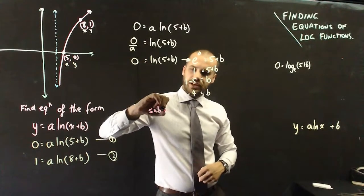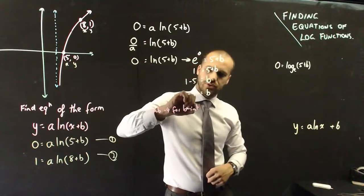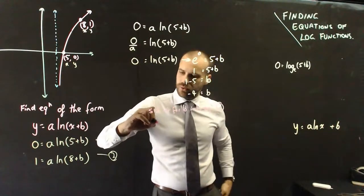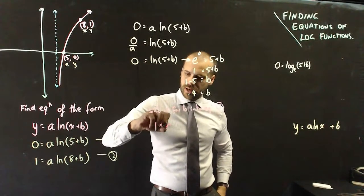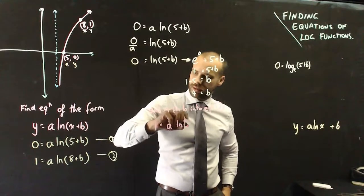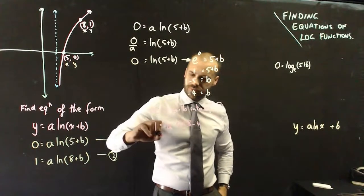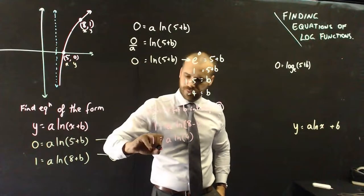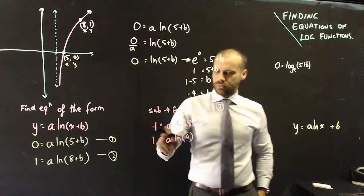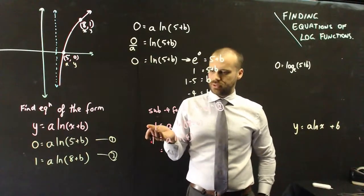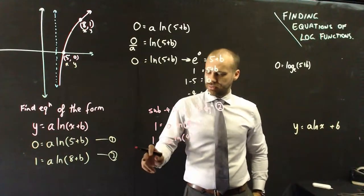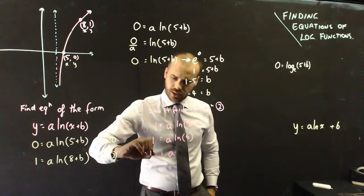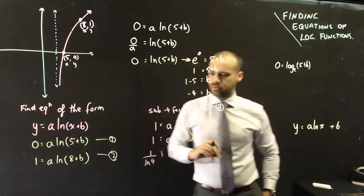Sub negative 4 for b into equation 2. Alright. So we have 1 equals a ln(8) minus 4. 1 equals a ln(4). What can I do with that now? I guess I could divide by ln(4). I have to say that a is equal to 1 over ln(4).